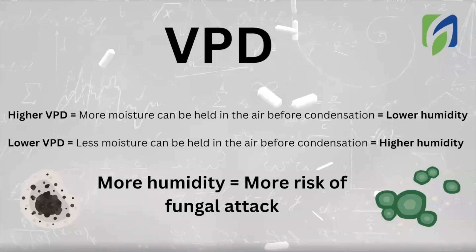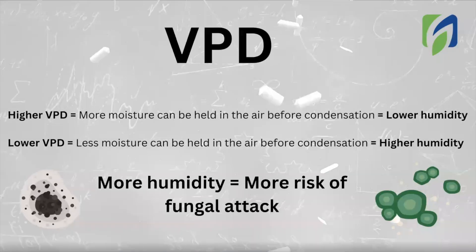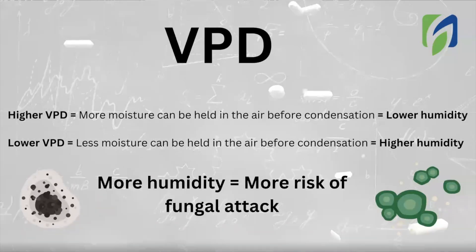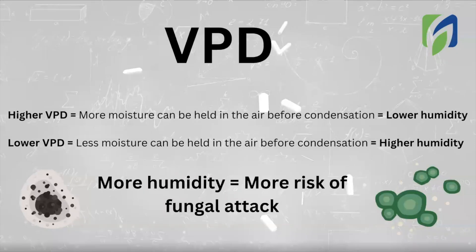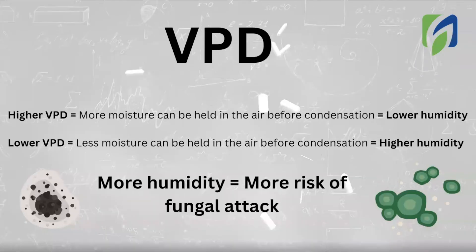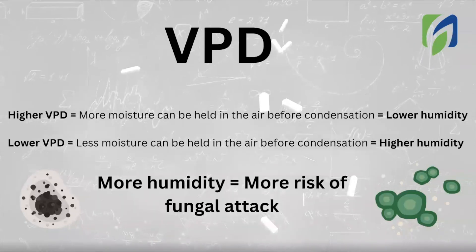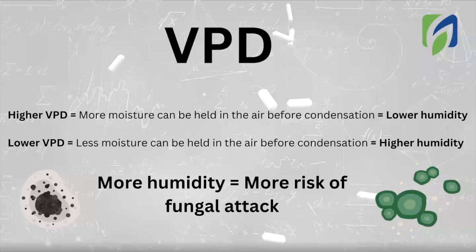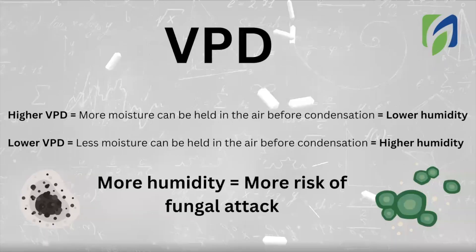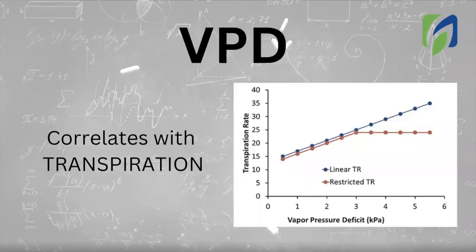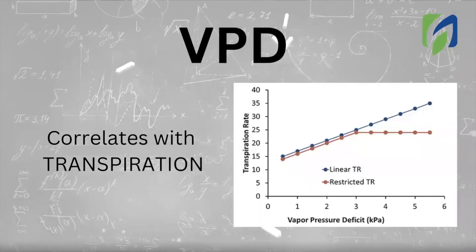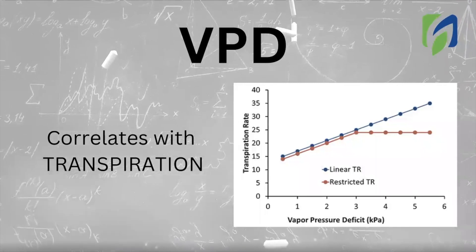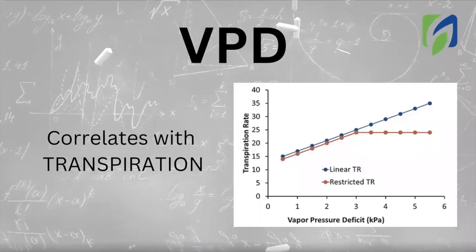This tool can help growers to maintain plants healthy with good transpiration levels, but without reaching points where fungi growth can be promoted. VPD also correlates with transpiration. Transpiration is good, but everything in excess can cause consequences.